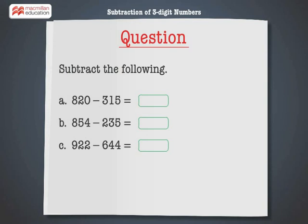Subtract the following: 820 minus 315, 854 minus 235, 922 minus 644.